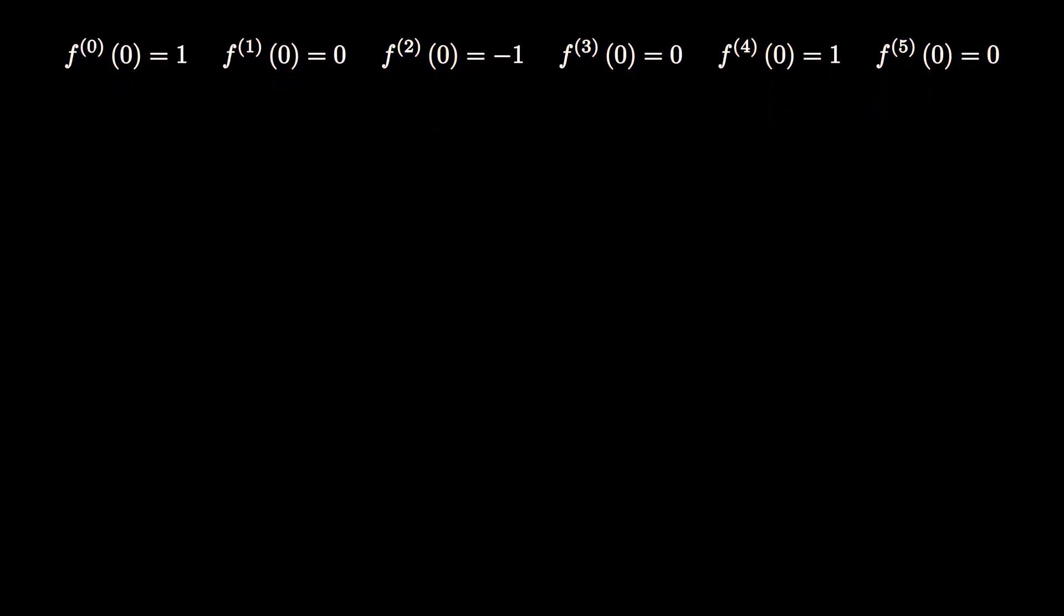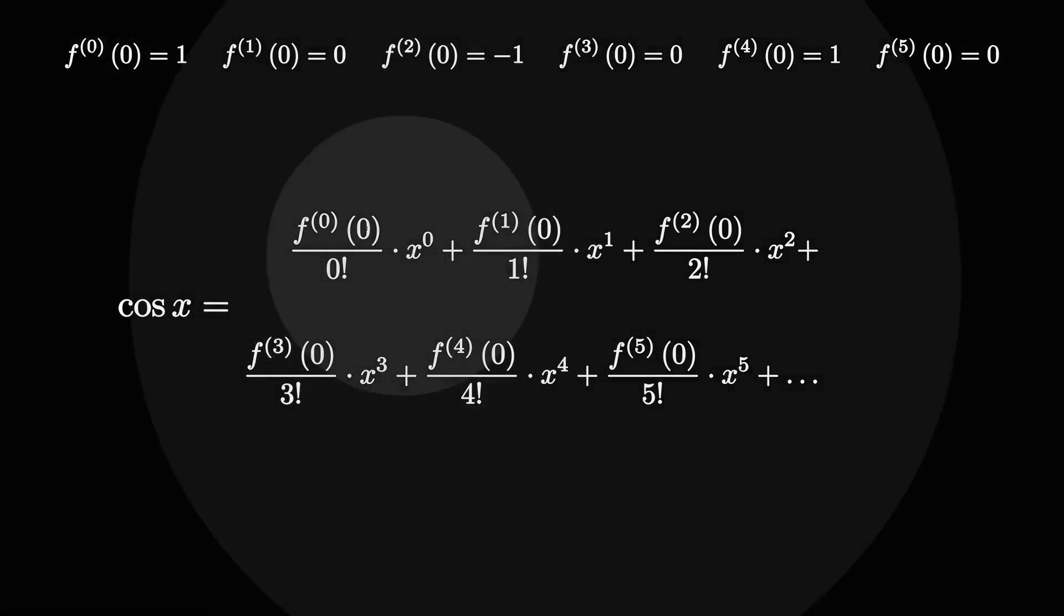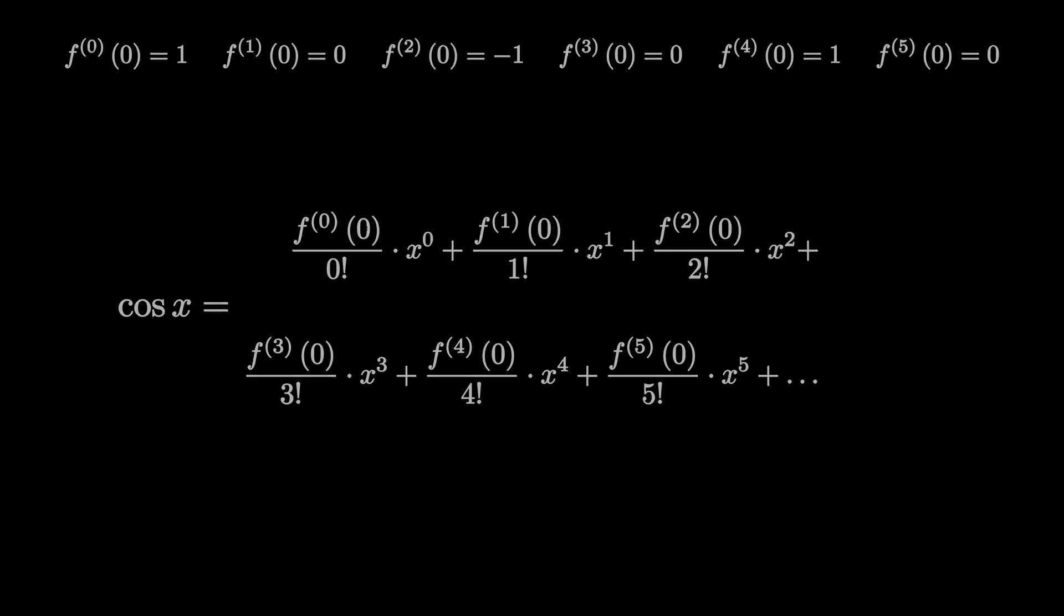Always evaluate them at x equals 0. And write down the Maclaurin definition. And just substitute each of these derivatives evaluated at x equals 0. Easy, right? And then there we have it, the Maclaurin series for cos x.